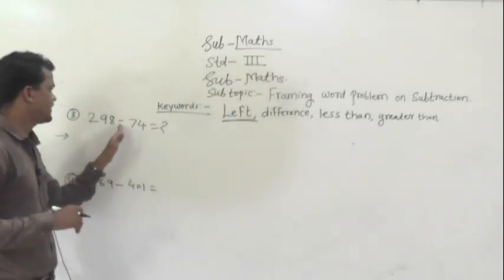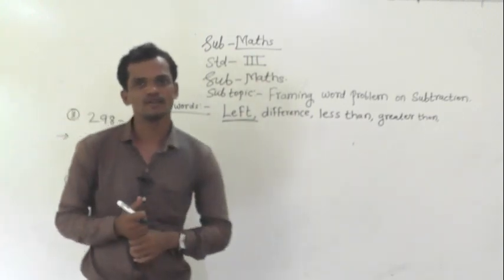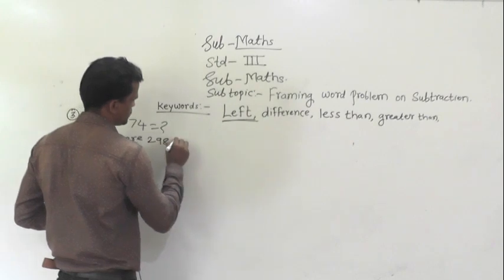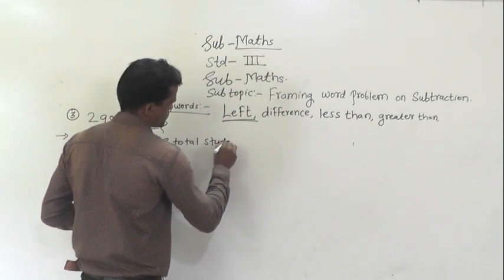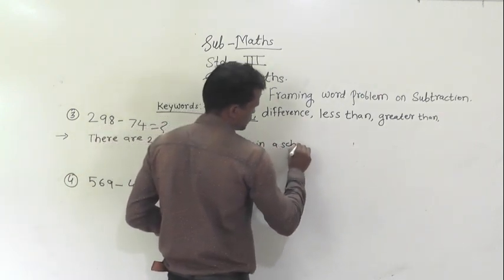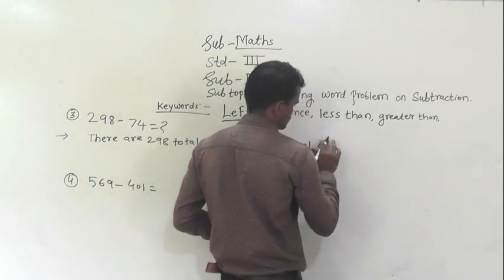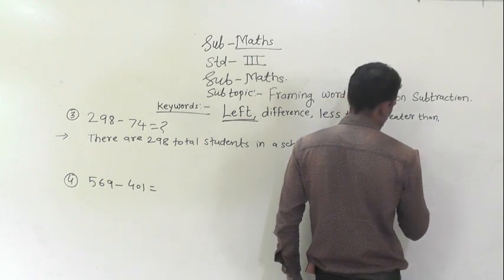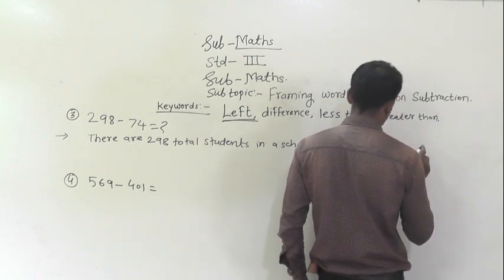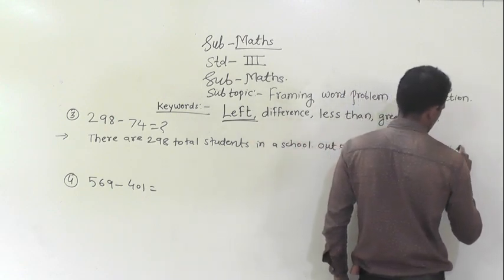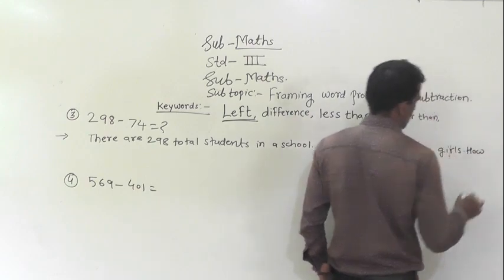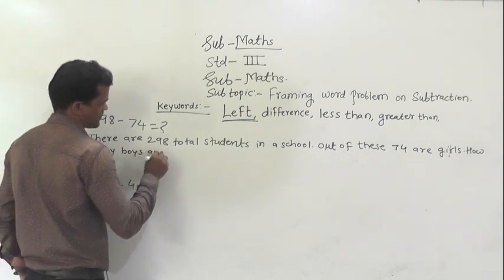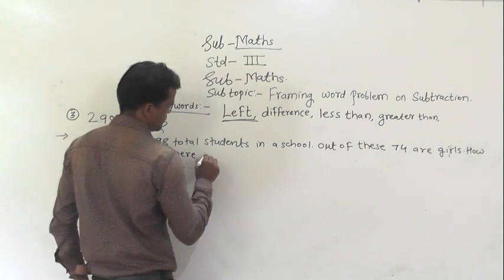Next example, 298 minus 74. We have to frame the word problems on this. Frame the word problems. There are 298 total students in a school. Out of these, 74 are girls. How many boys are there in the school?